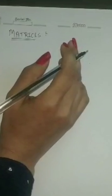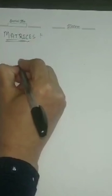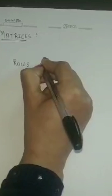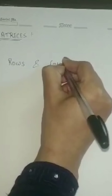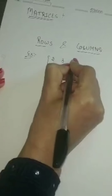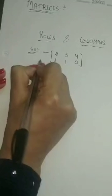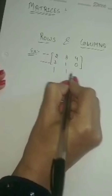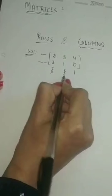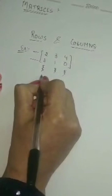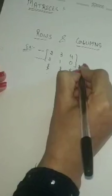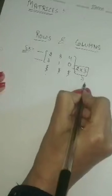First of all, a matrix represents a collection of numbers arranged in the form of rows and columns. For example, we are having a matrix: 2, 3, 4, 3, 1, 0. All these are rows and all these marked by a zigzag on a straight line are called columns. So here we are having 2 rows and 3 columns. So the order of the matrix is 2 into 3.